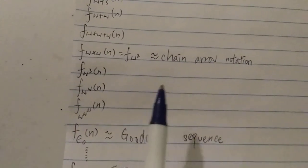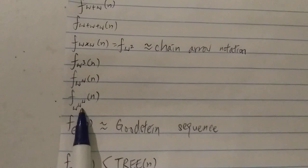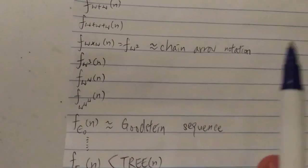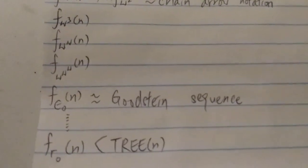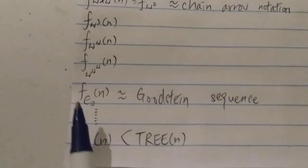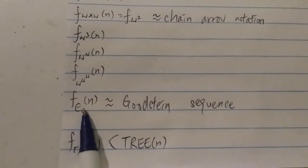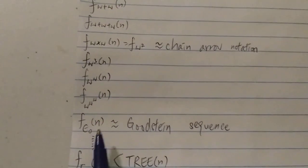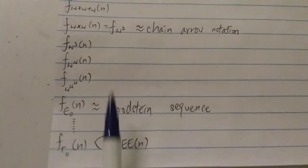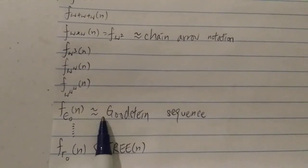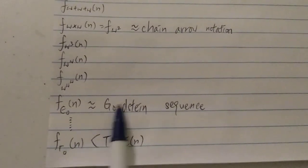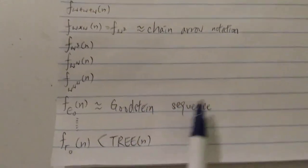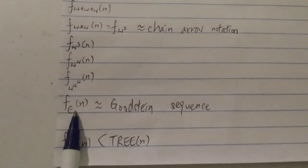Eventually you run out again, and you use another ordinal — epsilon-zero — which is way bigger than omega. F of epsilon-zero of n has a growth rate around the same as the Goodstein sequence or Goodstein function.